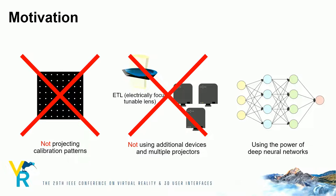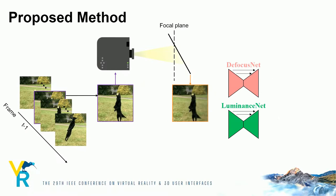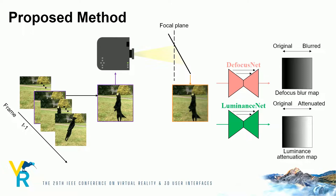We propose to apply convolutional neural networks to estimate the PSF and generate the compensation image. Our defocus net estimates the spatially varying PSFs, called the defocus blur map, from the projected result of the previous frame rather than that of a dot pattern. The defocus blur map represents how much each pixel of the projected image has been blurred.